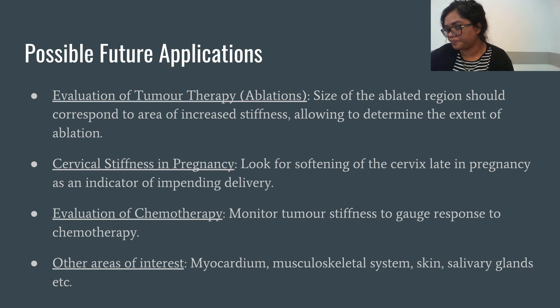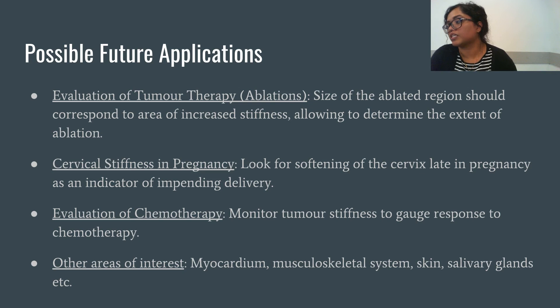Another area of promise is the evaluation of cervical stiffness in pregnancy — this application looks for softening of the cervix late in pregnancy as an indicator of impending delivery. Tumor stiffness will likely be an additional parameter used to gauge tumor response to chemotherapy, increasing the value of ultrasound for monitoring cancer patients. Many other potential applications are being explored, including the myocardium, musculoskeletal system, skin, salivary glands, and lymphedema.